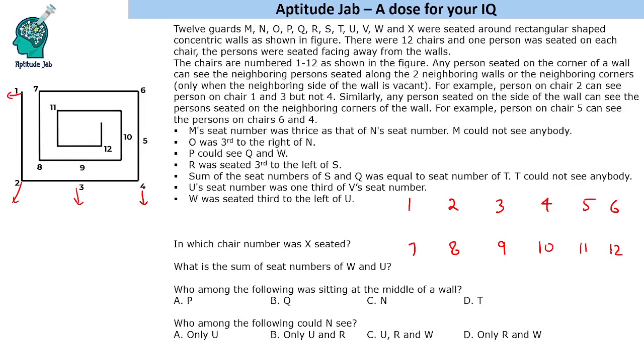Now the first hint that is given to us is M's seat number was thrice of N's seat number. M could not see anyone. So M is equal to 3N. If we put 1 and 3, this person can see both people. If we take 2 and 6, this person can also see the neighbours. If we take 3 and 9, then also this person can see 8. But if we take 4 and 12, 12 cannot see anyone. There is no one here and there is no one here. That means these will be 4 and 12. N will be 4 and M will be 12.